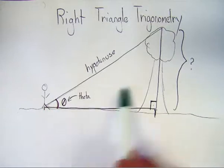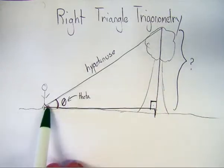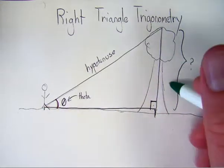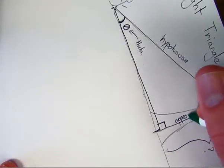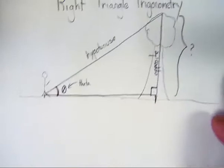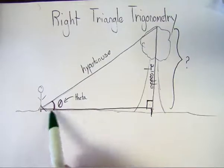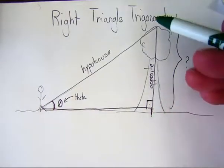Check this out. The side that is directly across from theta, the side that is opposite of that, we call the opposite side. I know, crazy, isn't it? So the side that's opposite of theta is the opposite side.